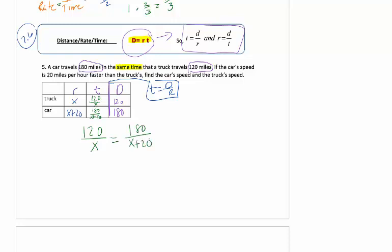That means we set these two times equal to each other for our equation. So 120 over x equals 180 over x plus 20. We now have a proportion, which is easier to solve because we're going to cross multiply. You should realize that x cannot be 0 and x cannot be negative 20, but that's obvious because we aren't going to deal with a truck going 0 miles per hour.